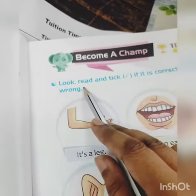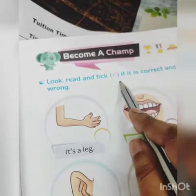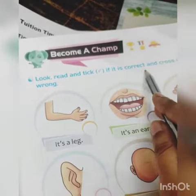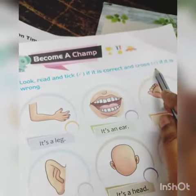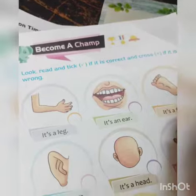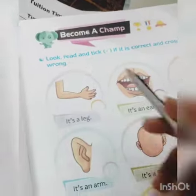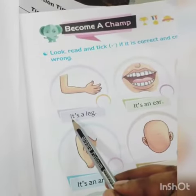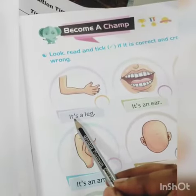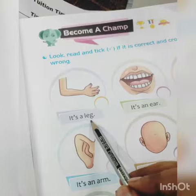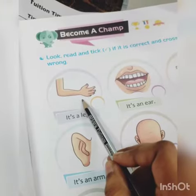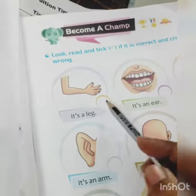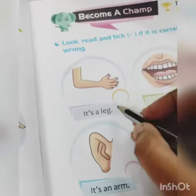Look, read and tick right if it is correct and cross wrong if it is wrong. So it's a leg. No, it is a hand. Cross it.